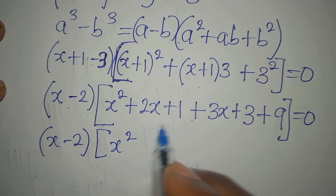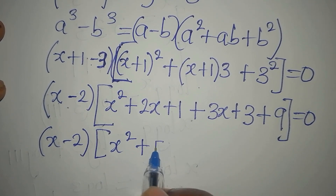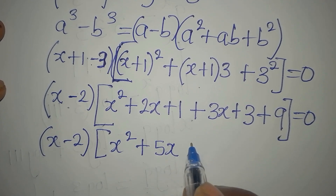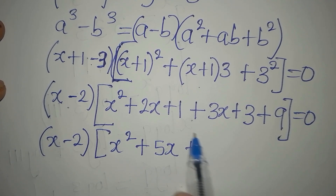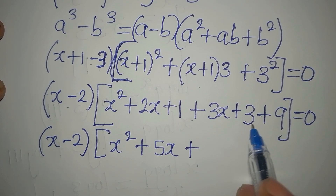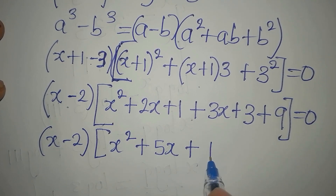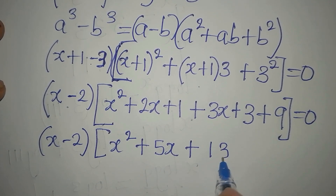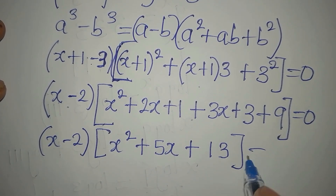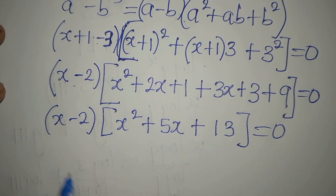So we have (x - 2) as a factor. Collecting terms inside the second bracket: x² + (2x + 3x) + (1 + 3 + 9) gives x² + 5x + 13, and everything equals 0.